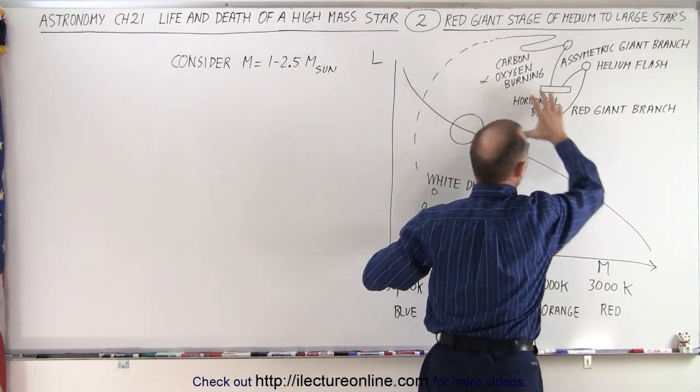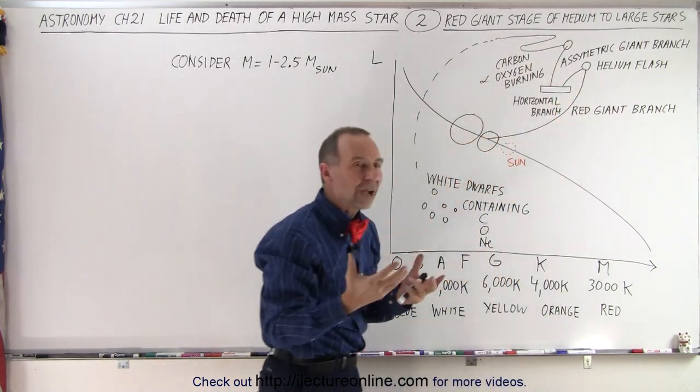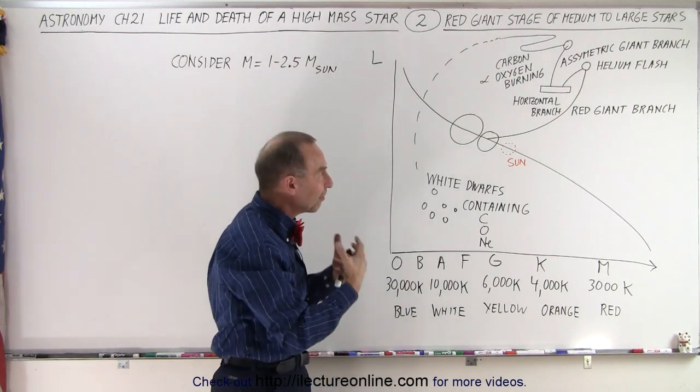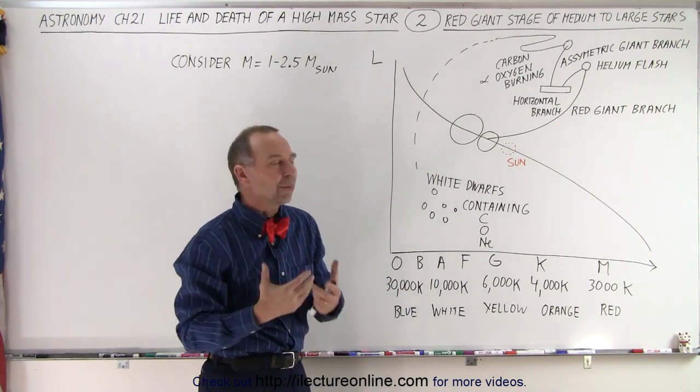This is where the star is in the red giant stage, and it stays as a red giant for about 50 million years, in a relatively stable format.